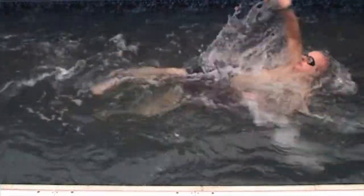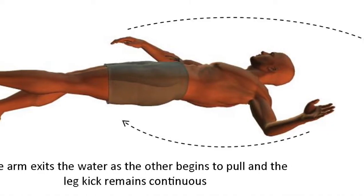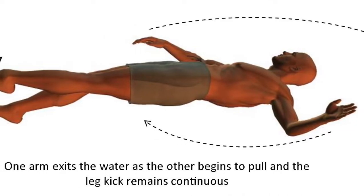The kicking and arm actions should be controlled and steady whilst maintaining a fixed head position. The stroke's optimal timing pattern is a six-beat cycle, where the swimmer kicks six times per arm cycle.